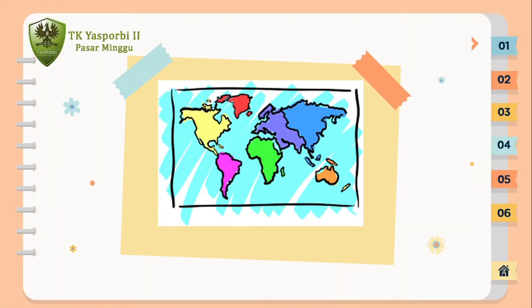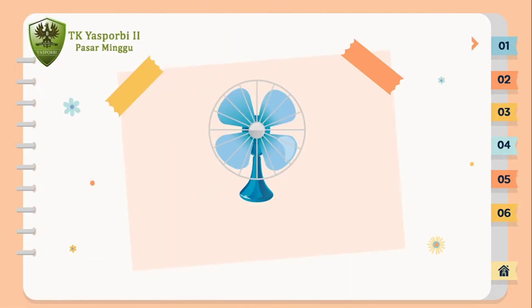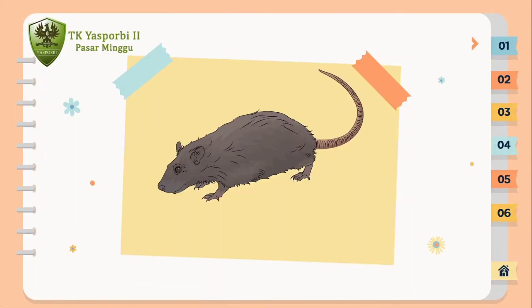Friends, do you know what is the picture? Yes, it is a map. What is this? Yes, this is a fan. And what about this? Yes, this is a rat.